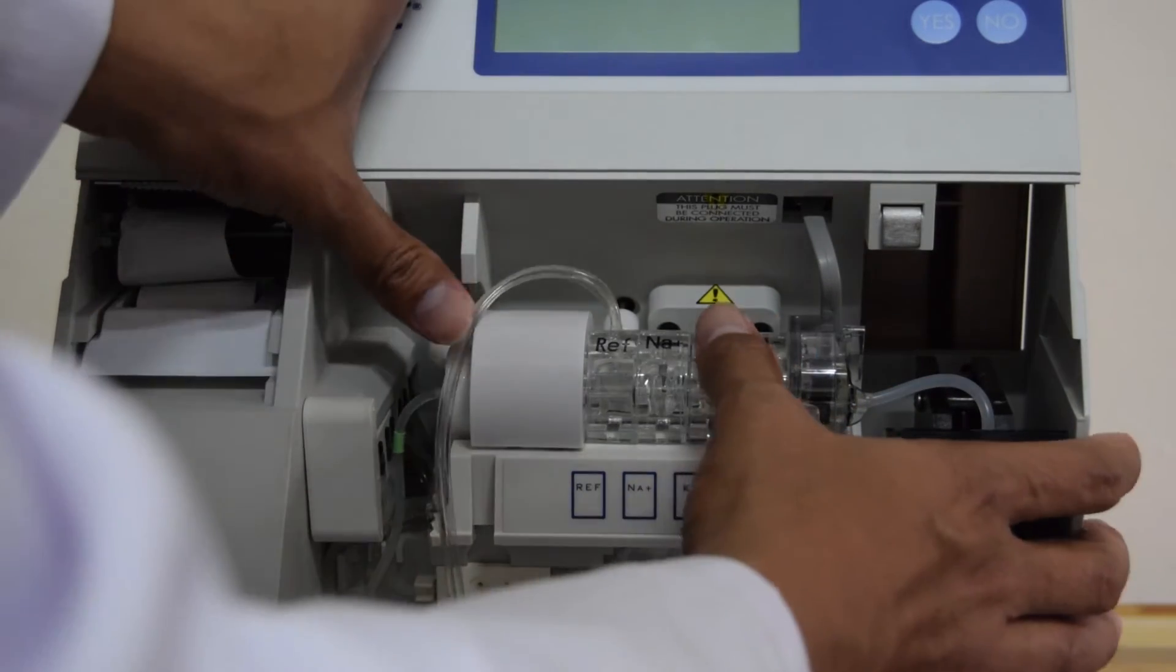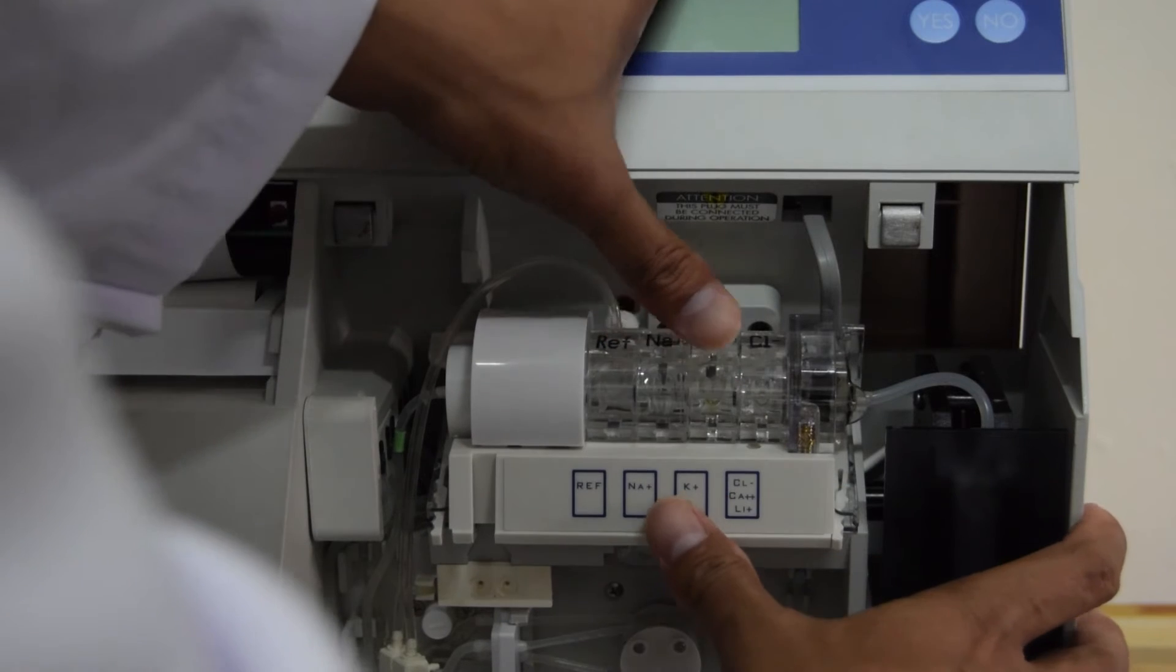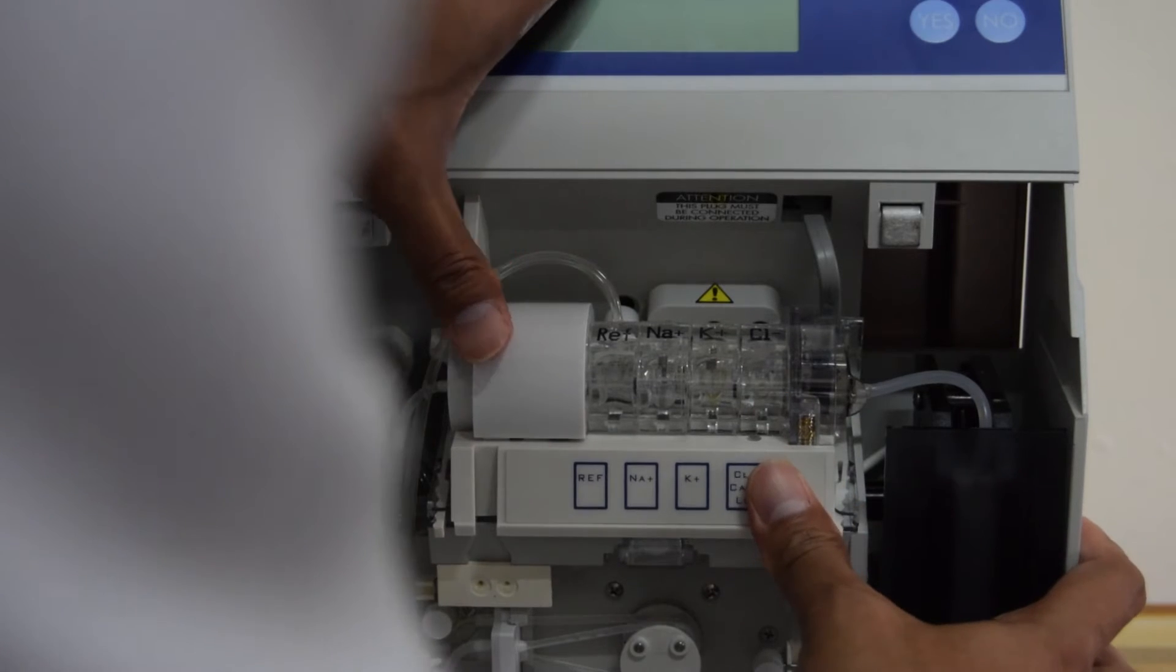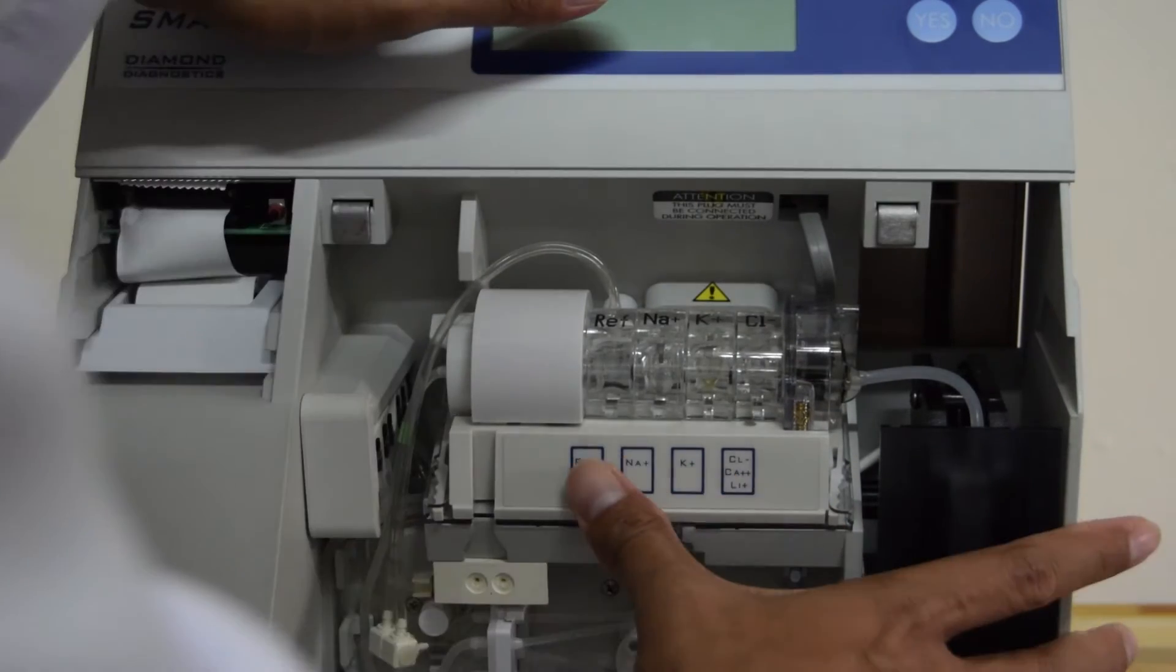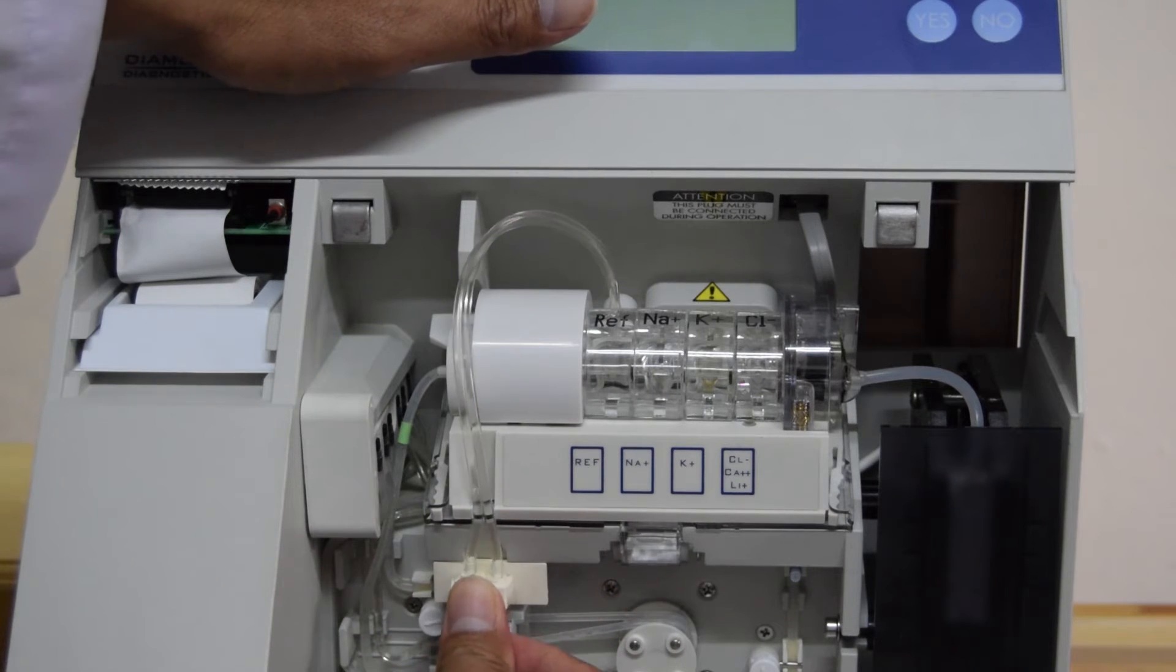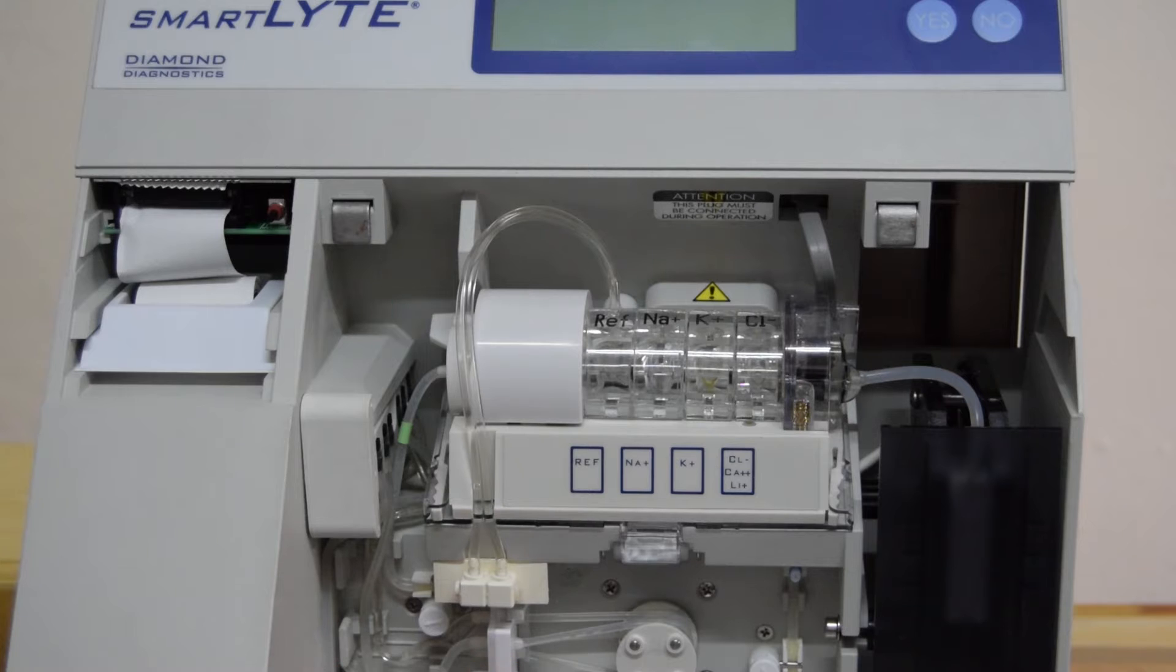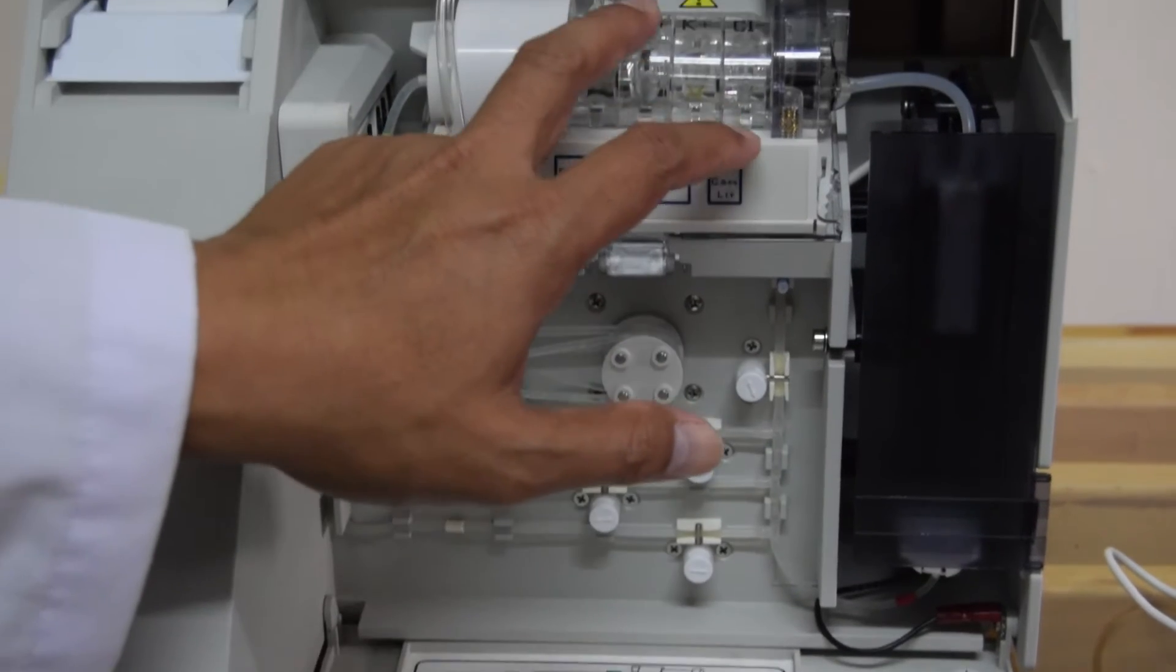Setelah masuk, posisi sudah masuk. Kita tinggal mendorong pelan-pelan. Perhatikan lagi. Dipastikan masuk ke lubang. Setelah masuk keempat-empatnya. Konektor dari ref ditancapkan ke soket ini. Seperti ini. Dan selesai untuk pemasangan elektroda. Jadi kita sudah menyelesaikan tiga step. Tadi melepas penjepitan dari pinch valve, memasang selang peristaltik, sekarang elektroda.